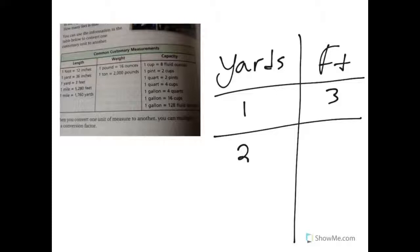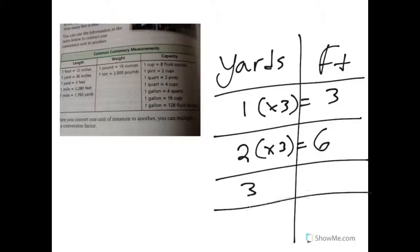Two yards, therefore, since I know that it's 1 times 3 to equal 3, I'm gonna multiply by 3 here, which would give me 6 feet. If I said three yards, I know 3 times 3 would be 9 feet. So in three yards there are nine feet.